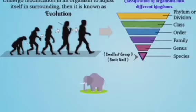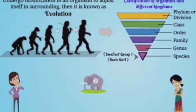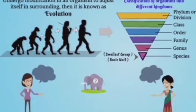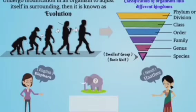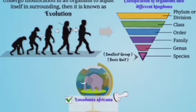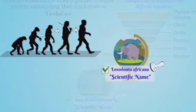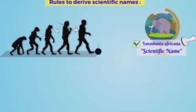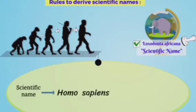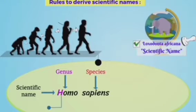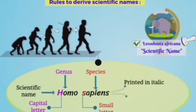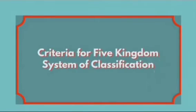After classification, there was a problem because every organism was named in local languages, making classification very difficult for scientists. So scientists formed special scientific names. The scientific name also has rules. For example, in Homo sapiens, the first word is the genus and the second word is the species. The genus is written with a capital letter and the species with a small letter.